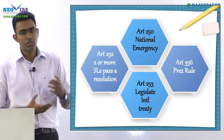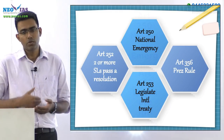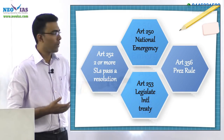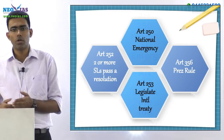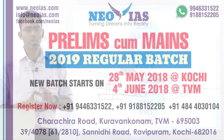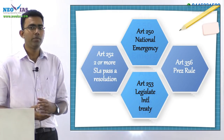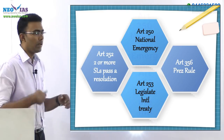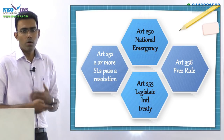Article 253 also empowers Parliament to legislate on state subjects in order to give effect to an international treaty or agreement. And Article 356 — when President's rule or state emergency has been declared — also gives Parliament the power to legislate on state subjects. So these are the five important areas wherein Parliament can legislate on state subjects.